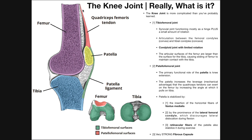Proximally, we have the quadriceps tendon, and of course up here we have the quadriceps muscles. They insert on the quadriceps tendon, which inserts on the patella. The patella is kind of meshed in here with the tendon and the patellar ligament. The patellar ligament inserts on the tibia at a spot called the tibial tuberosity.